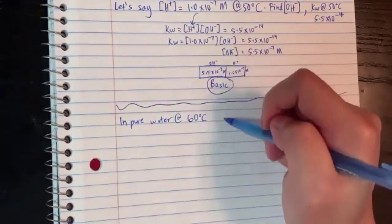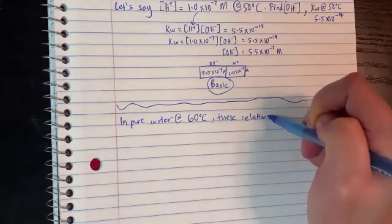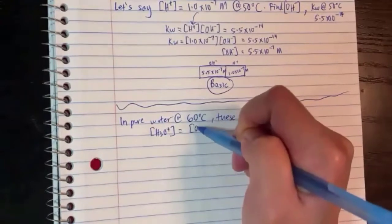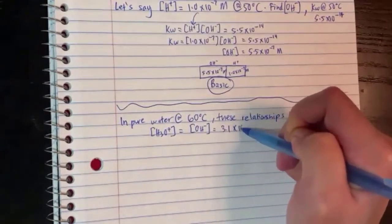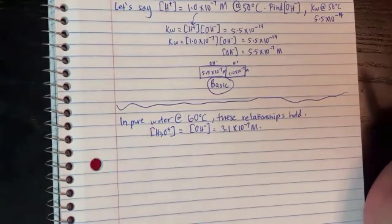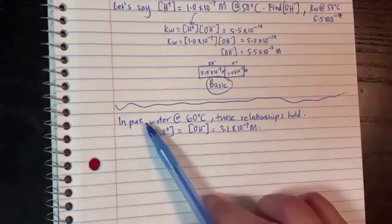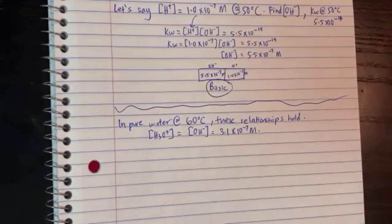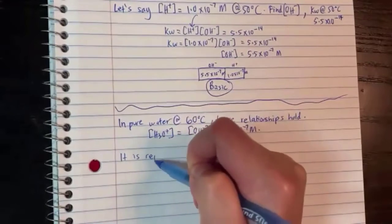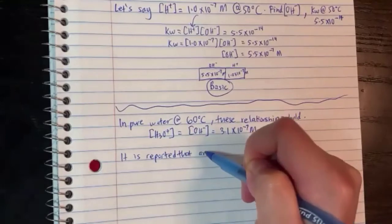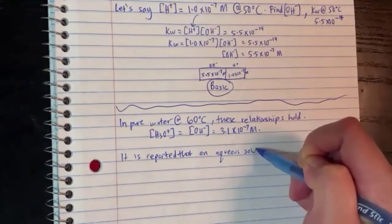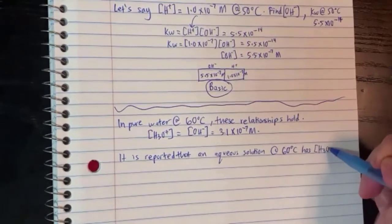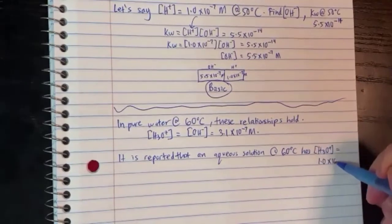Let's do another question at 60 degrees Celsius. These relationships hold: H₃O⁺ equals OH⁻ equals 3.1×10⁻⁷ molarity. So they gave us the pure water values at 60 degrees without the KW. They gave you the middle line. It is reported that a solution at 60 degrees has H₃O⁺ equals 1.0×10⁻⁷ molarity.